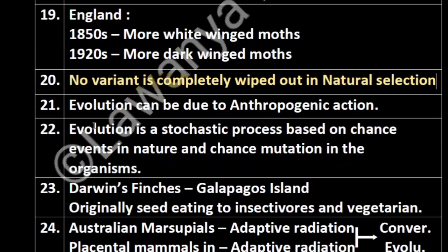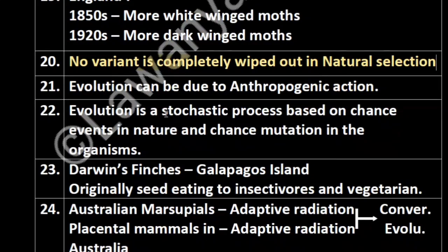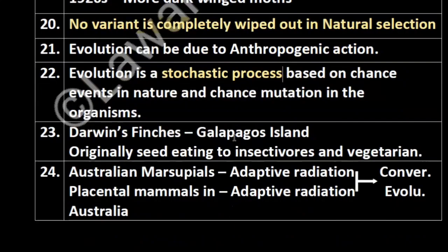Evolution can be due to anthropogenic actions. The best example is industrialization. Also, antibiotic resistance added due to our use of antibiotics, and herbicide/fertilizer resistance in fields — these are examples of evolution due to anthropogenic action. Evolution is a stochastic process based on chance events in nature and chance mutations in organisms — this is an important exam point.